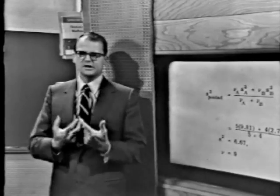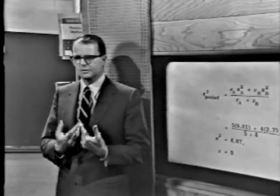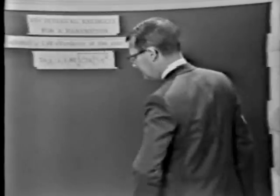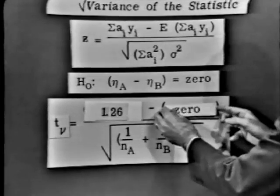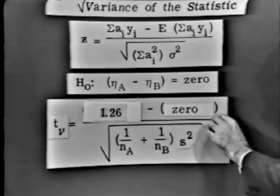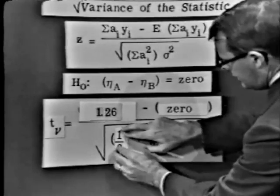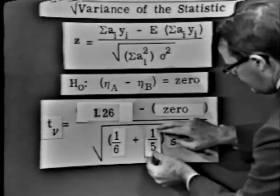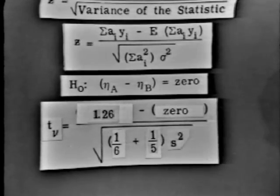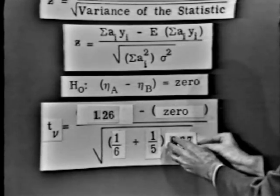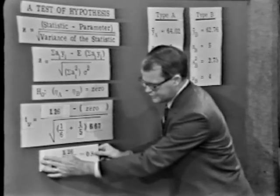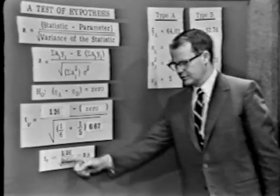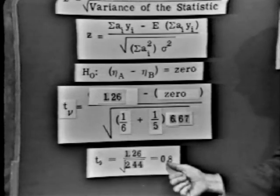Now we're in a position to continue with our test of hypothesis. Let's put those numbers into our calculations. The difference between the two averages is 1.26, and the hypothesized value for eta A minus eta B is zero. 1 over N_A is 1 over 6, and 1 over N_B is 1 over 5. The estimate of the variance, S squared, is 6.67. Going through that calculation, we produce a T with 9 degrees of freedom: T equals 1.26 divided by the square root of 2.44, which equals 0.8.